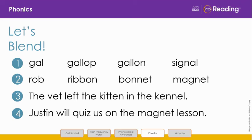We are going to read each line one at a time together. Are you ready? Line one: gal, gallop, gallon, signal. Line two: rob, ribbon, bonnet, magnet.